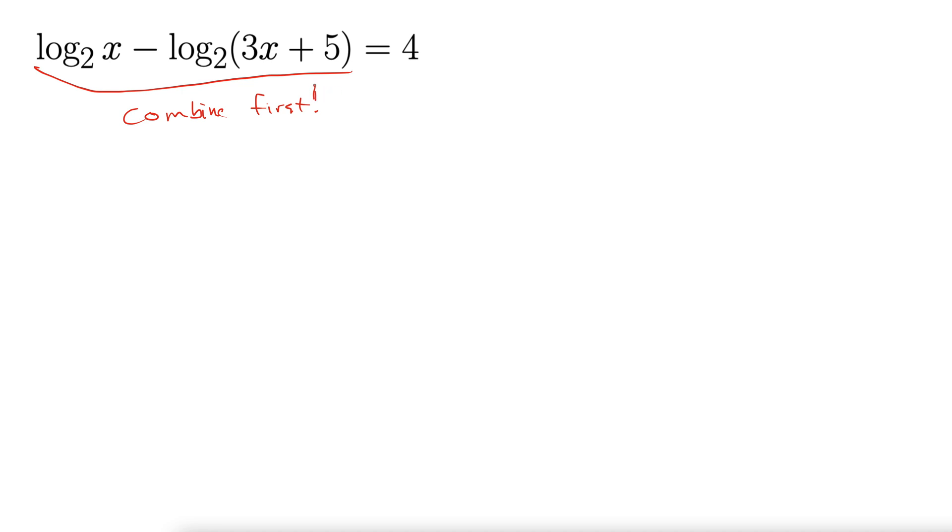Okay, the most important thing with these logarithmic equations. So let's do it. We use the properties of logarithms to combine. That gives us log base 2 of x over 3x plus 5 equals 4.